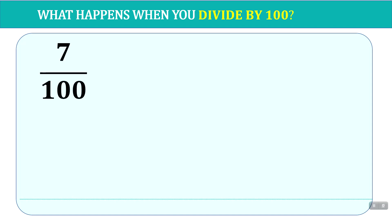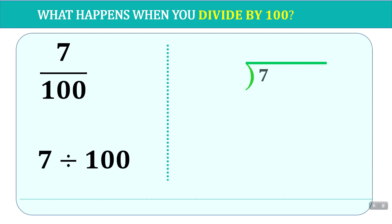If we had 7 over 100, the fraction 7 over 100 can be written as 7 divided by 100. And if we took 7 and divided that by 100 using the long division method, we put 7 here, 100 outside, and we try to divide 7 by 100. We ask ourselves how many times can 100 go into 7, and we know it cannot because 7 is too small. So we put 0.